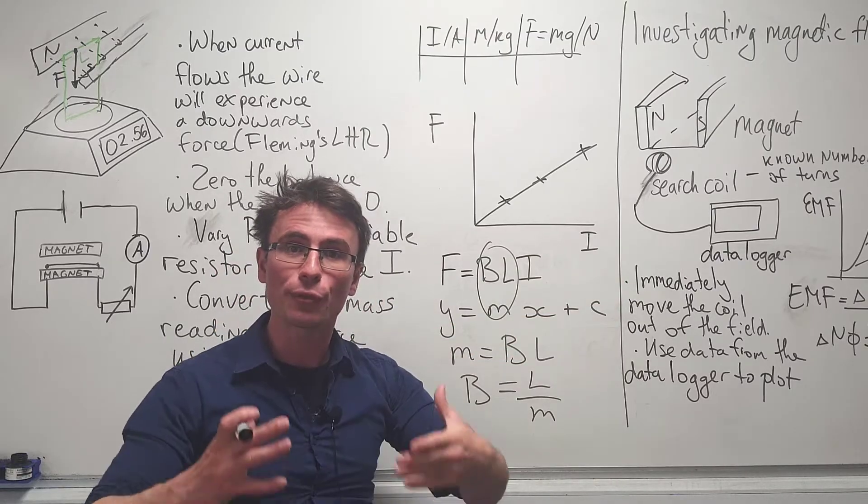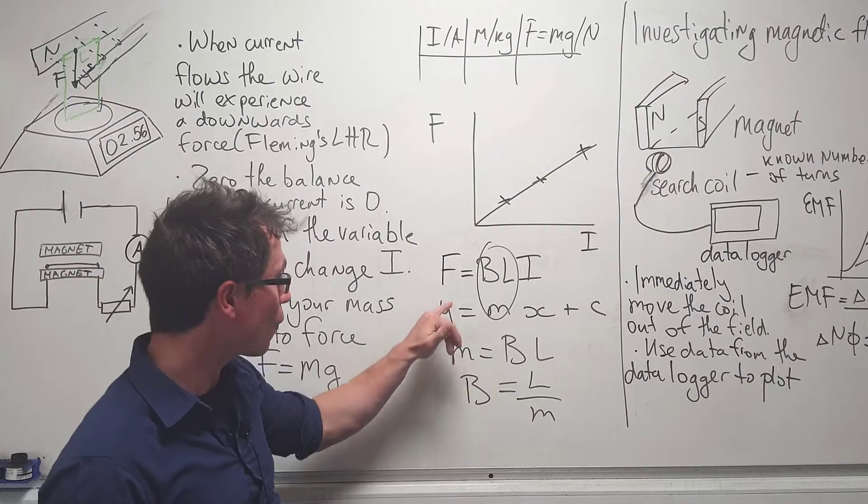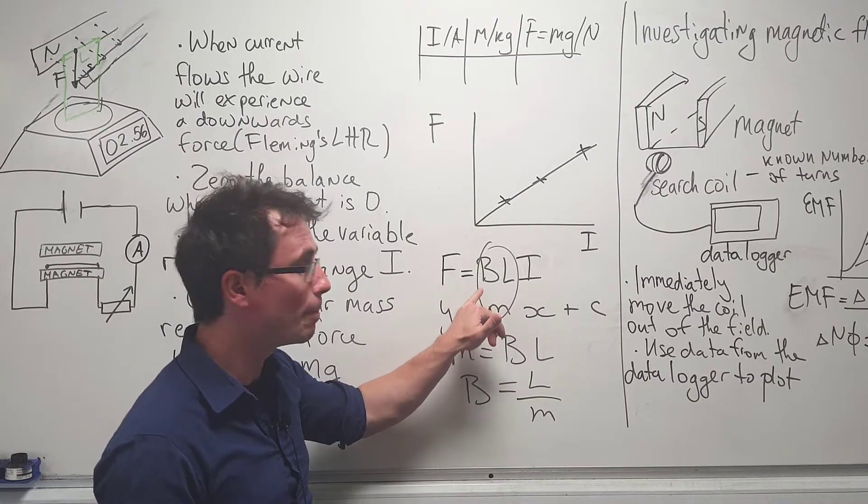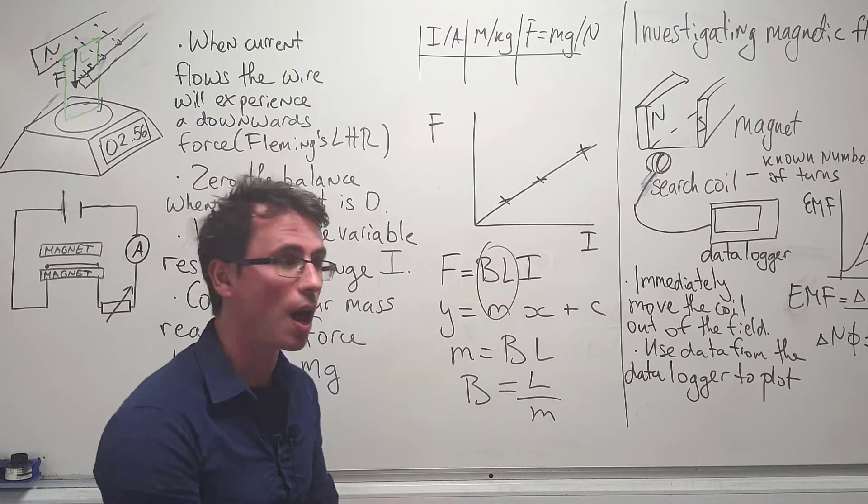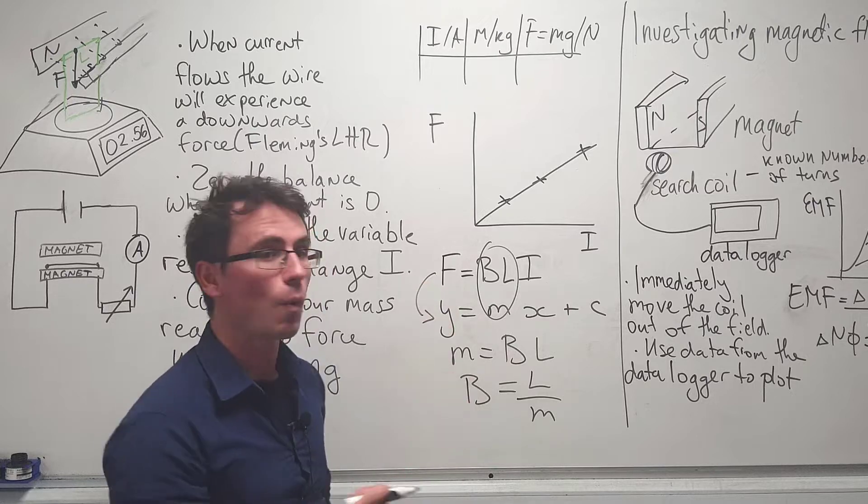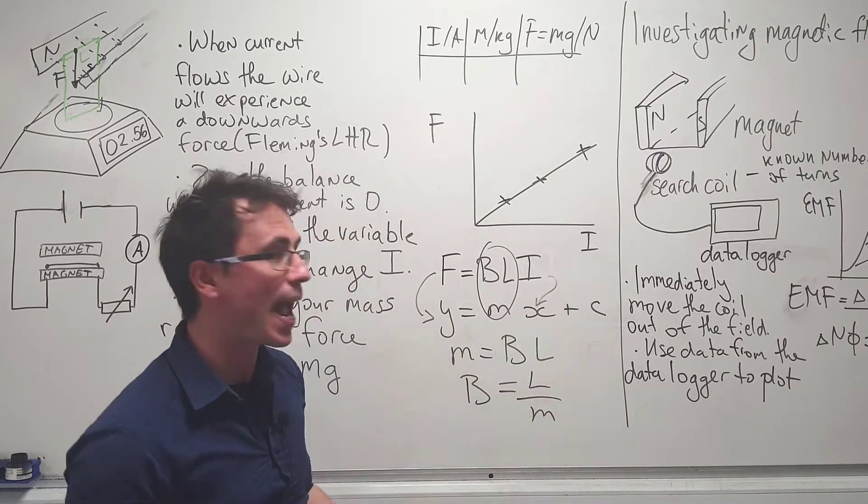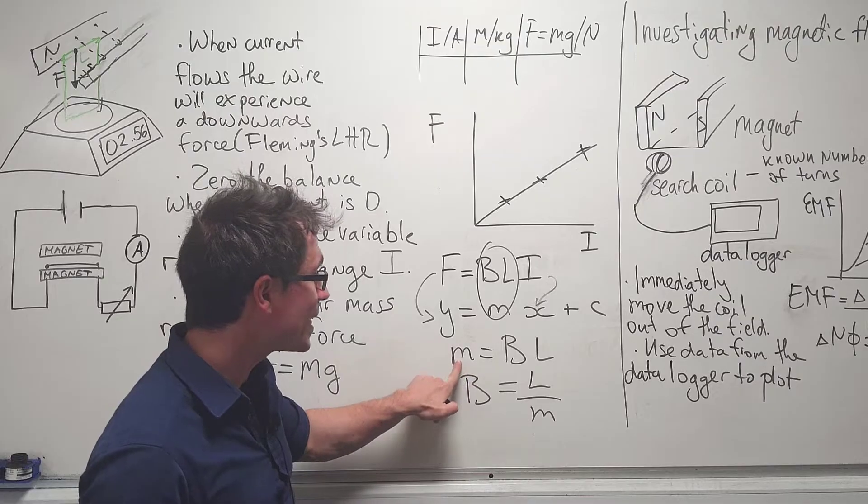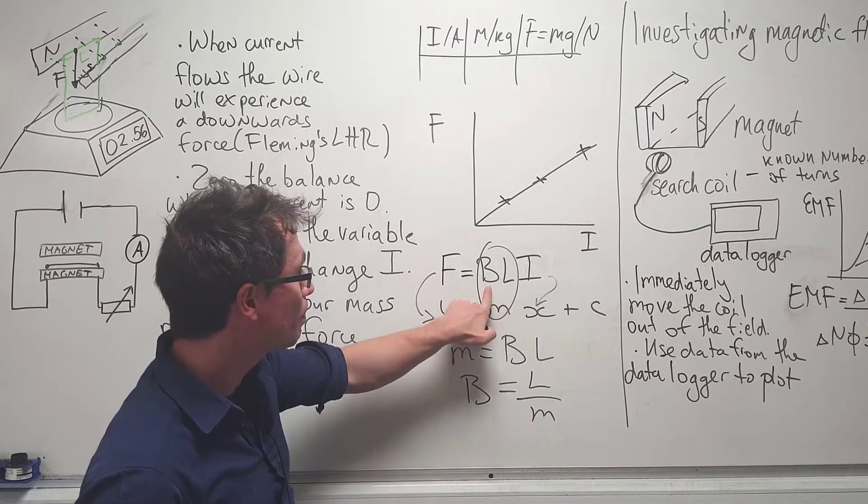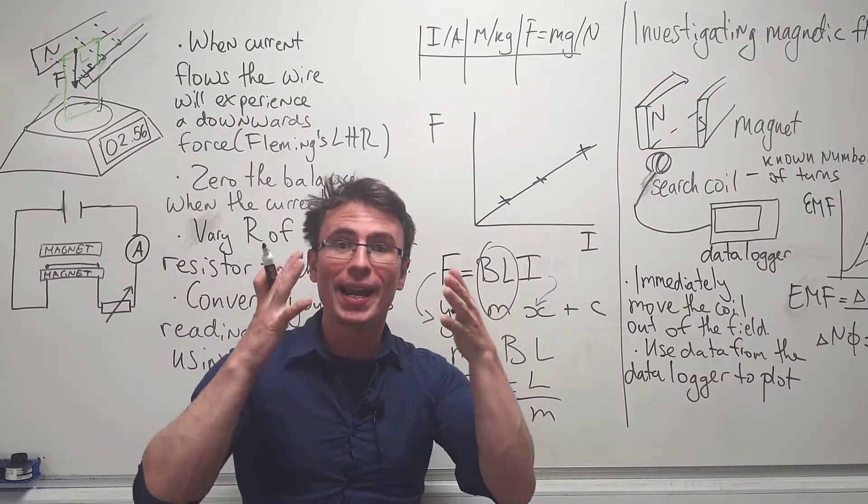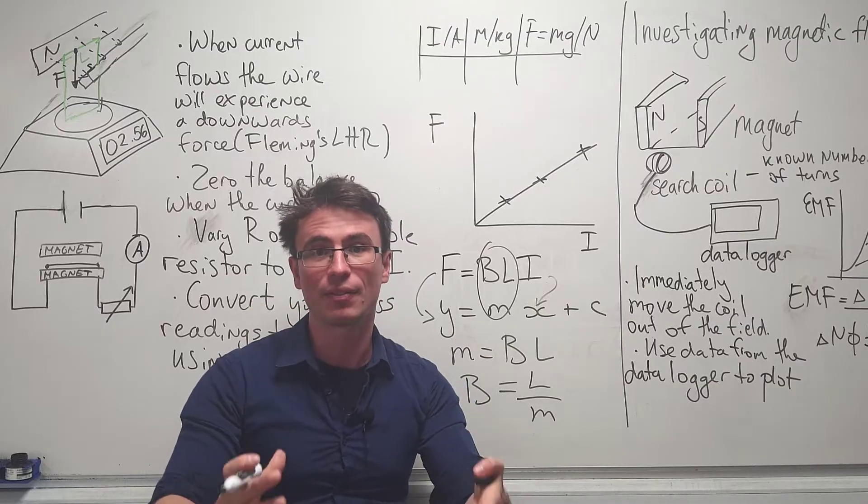Because the equation for the magnetic flux density or the force is F equals BIL, or BL times I, if F is on the y-axis and I is on the x-axis, this means that our gradient M will be equal to B times L, where L is the length of the wire.